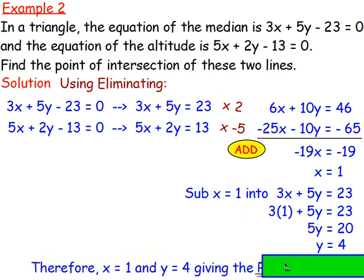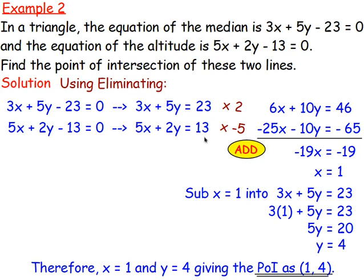That gives x equals 1 and y equals 4, so the point of intersection is (1, 4). To double-check, sub x and y into the other equation — if you sub into 5x add 2y minus 13 you should get 0. If you used one equation to find the answer, use the other to check it. Either way, the point of intersection is (1, 4).